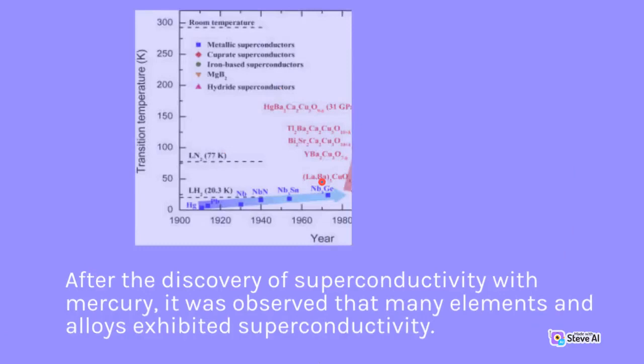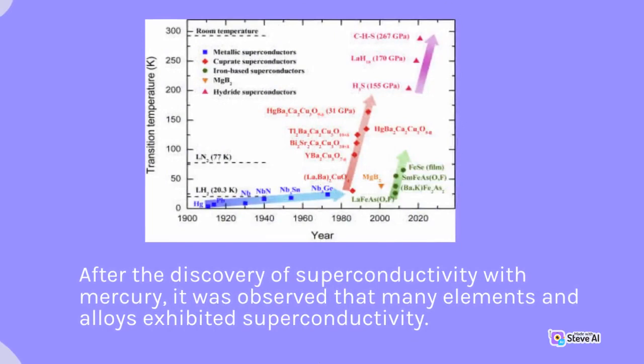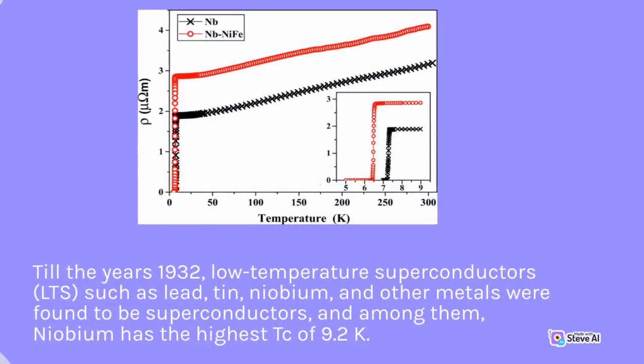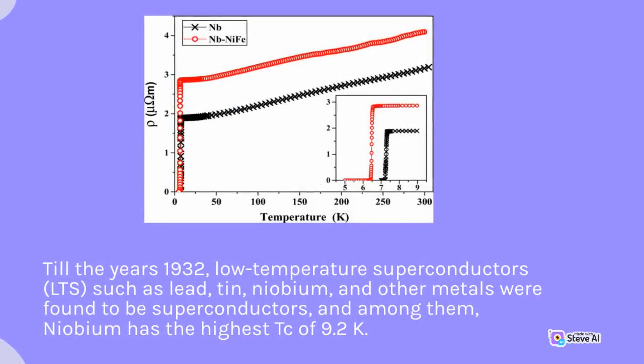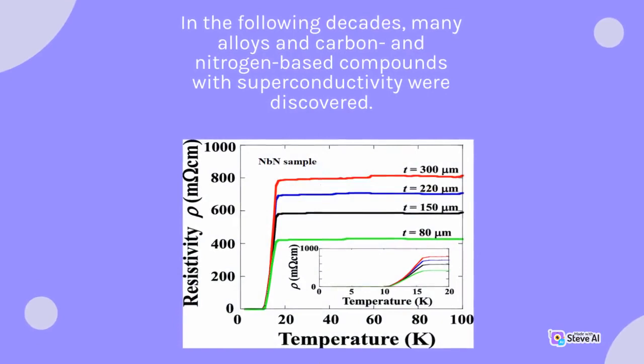After the discovery of superconductivity with mercury (Hg), it was observed that many elements and alloys exhibited superconductivity. Until 1932, low-temperature superconductors (LTS) such as lead, tin, niobium, and other metals were found to be superconductors. Among them, niobium has the highest Tc of 9.2 K. In the following decades, many alloys and carbon- and nitrogen-based compounds with superconductivity were discovered.